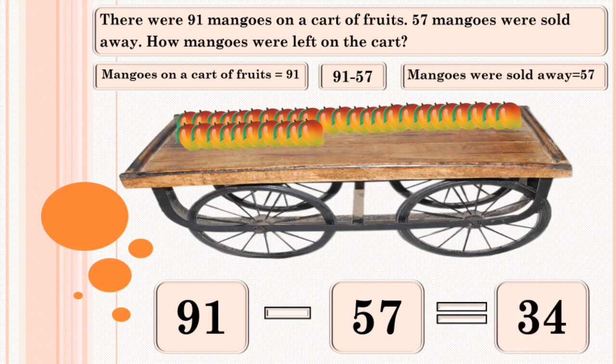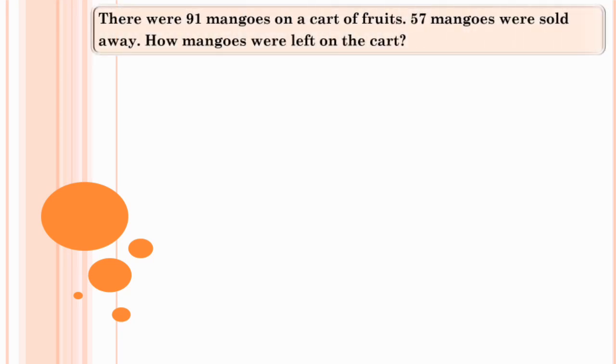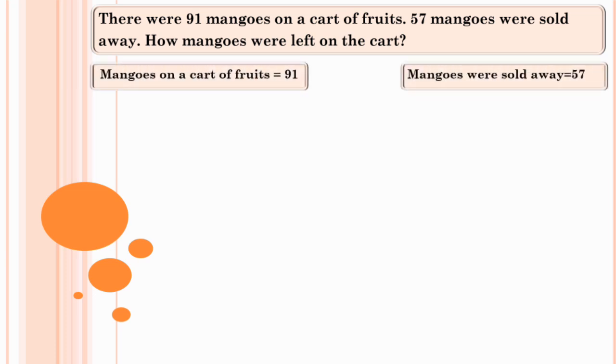Let's do this sum in one more method. Here we will subtract 57 from 91 in a new way. We are going to split 57 into 4 parts.